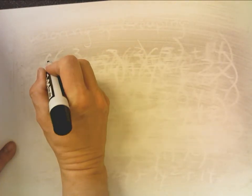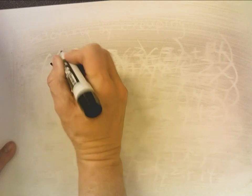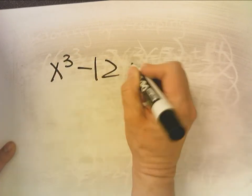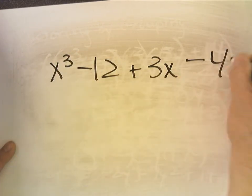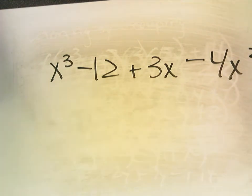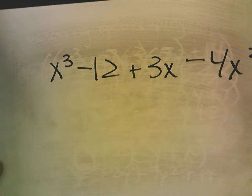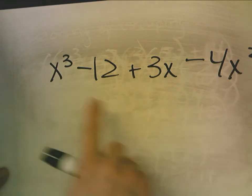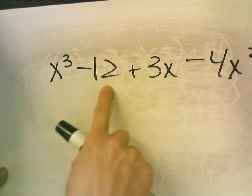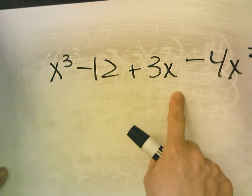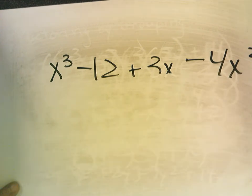Now, let's look at this. x cubed minus 12 plus 3x minus 4x squared. Now, if I try to factor this by grouping, it's not going to work. And it's not going to work because this has no common factor other than 1. And this just has a common factor of x. But I can regroup these.